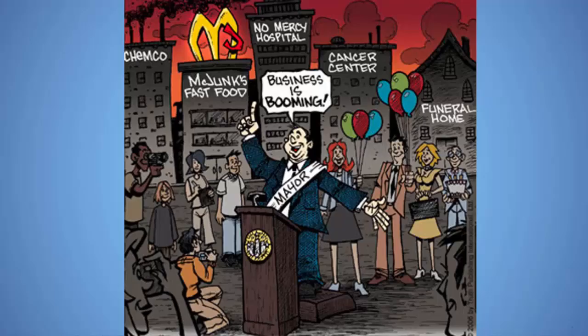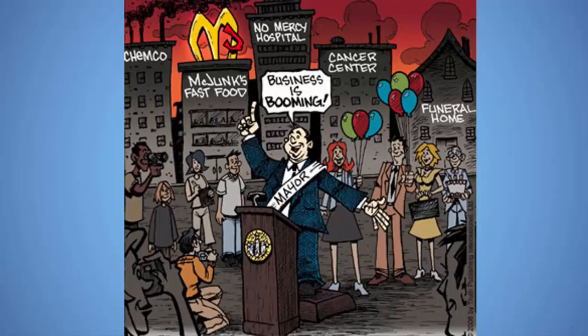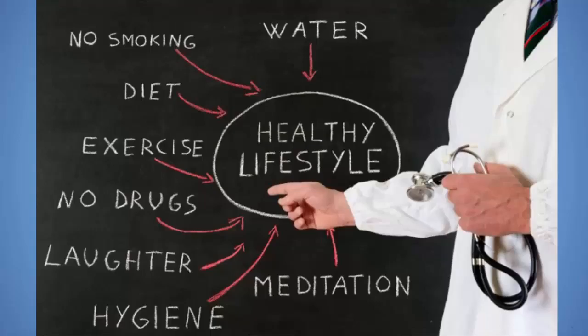The social correlates of health can include the social and economic environment, the physical environment, material and economic factors, as well as a person's individual characteristics and behaviours. They may include such things as geographical location, discrimination, income, level of education, quality of relationships with friends and family, culture, healthy child development and interactions with other people in society.